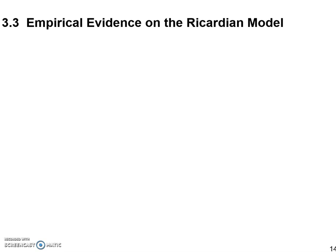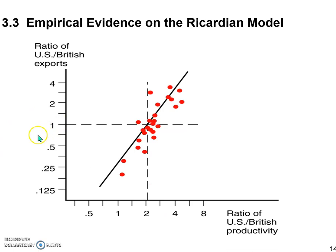Specifically, we're going to discuss two pieces of empirical evidence. In the economic literature, you can find a lot of empirical studies testing the Ricardian model, but here we only picked two to discuss. The first one we're looking at is a comparison between the US and UK.